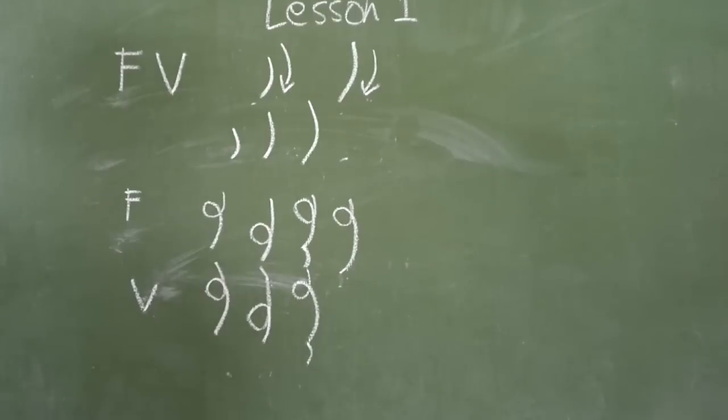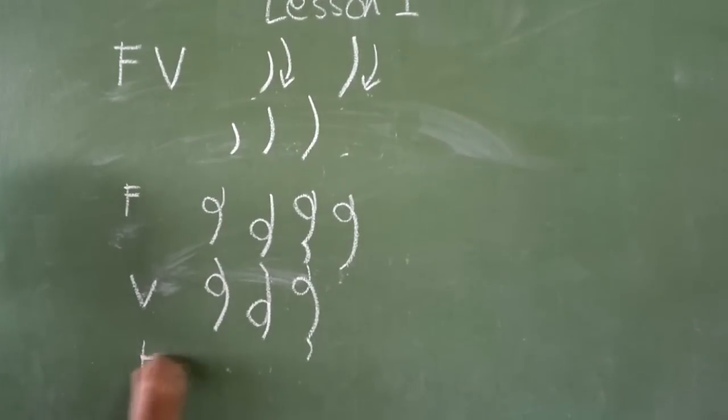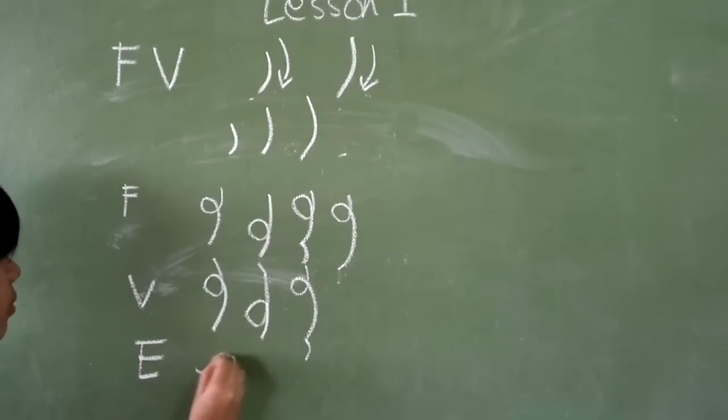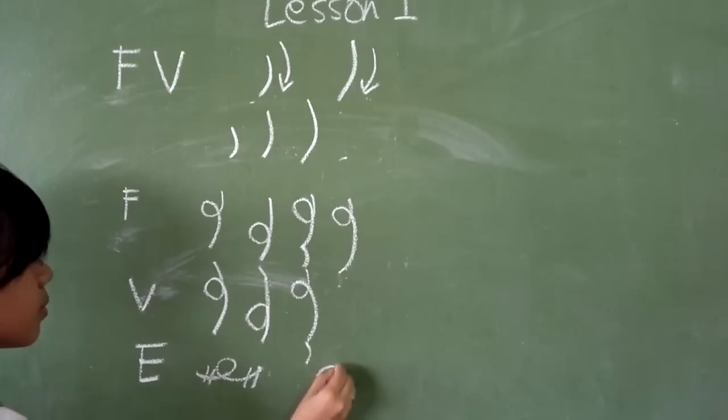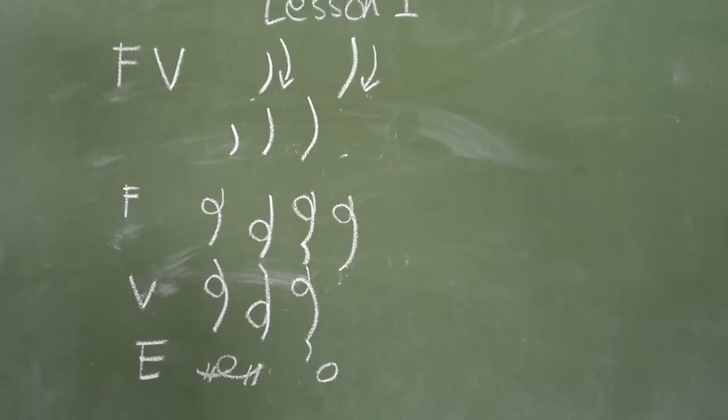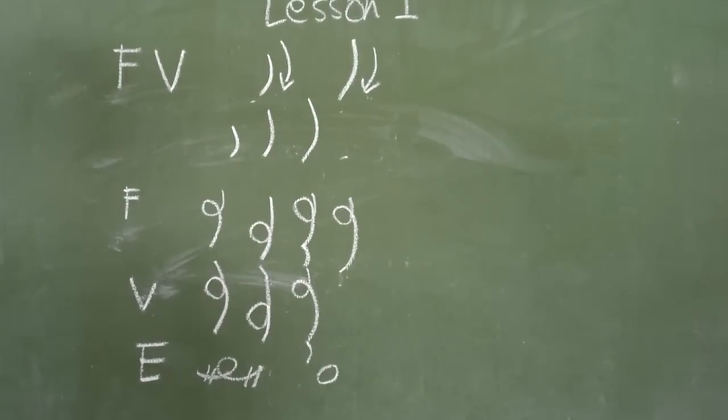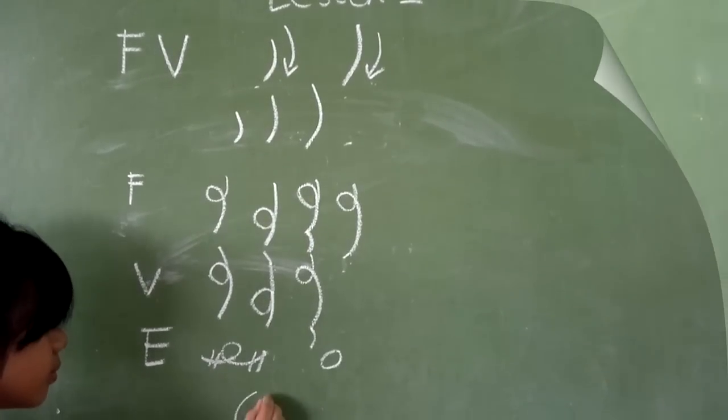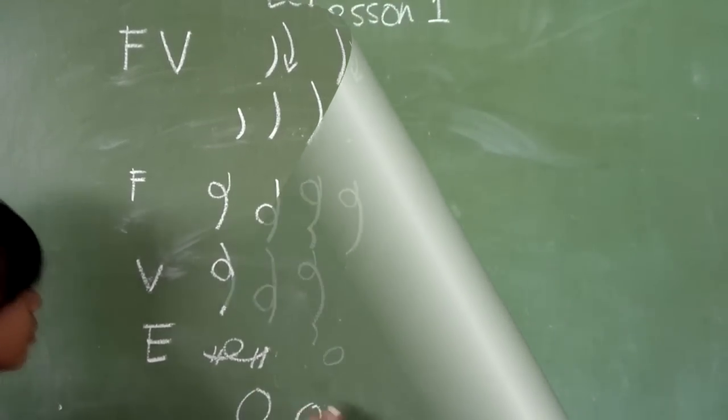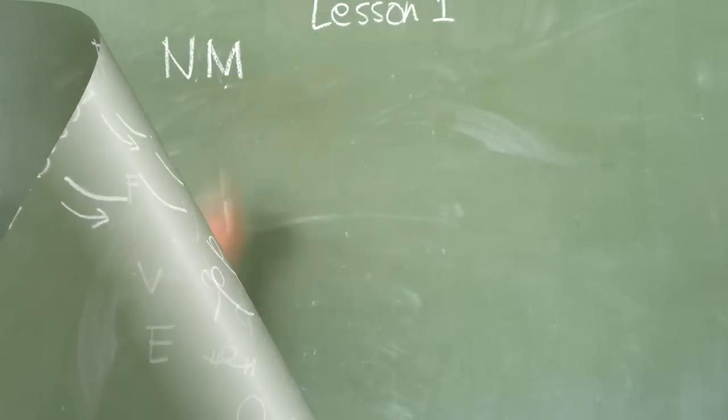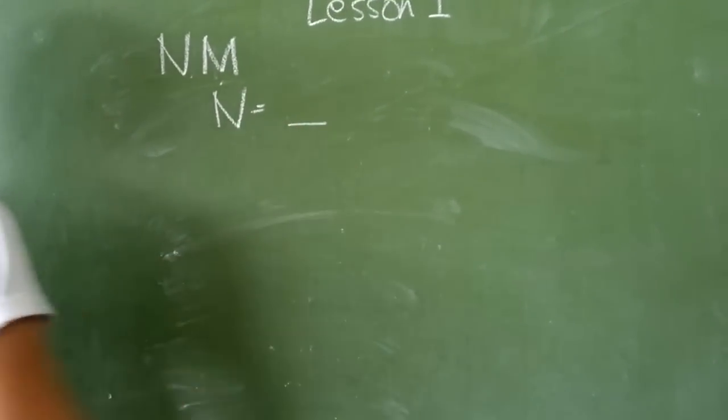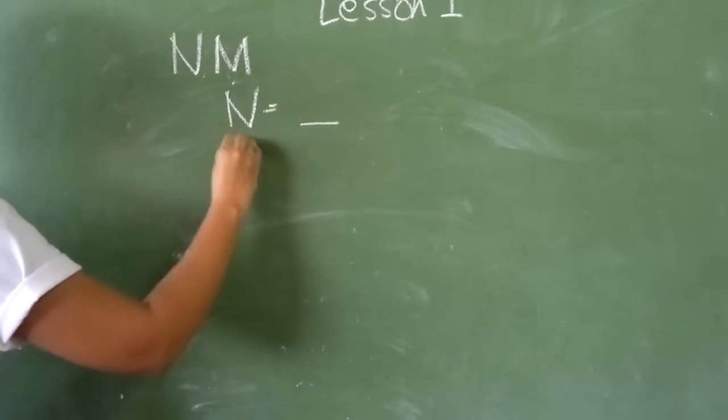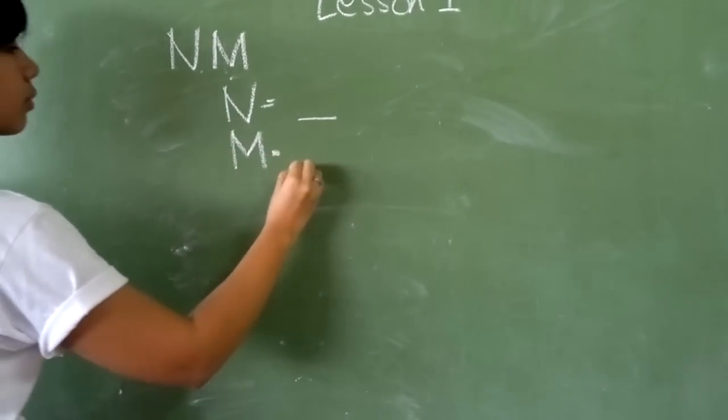Another important vowel in English language is the letter E. The shorthand E is represented by a tiny circle, basically a smaller circle than the shorthand A that we've tackled previously. The shorthand stroke for N is a very short forward straight line. The shorthand stroke for M is a longer forward straight line. Observe their sizes: letters N and M.